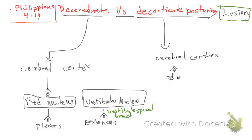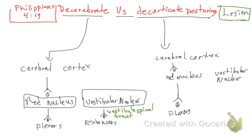The cerebral cortex goes to the red nucleus, the red nucleus goes to the flexors, and we also have the vestibular nucleus involved. You might ask why we're repeating the same pathway — it's because it is the same pathway, but what changes is the location of the lesion. The vestibular nucleus still connects to the extensors.